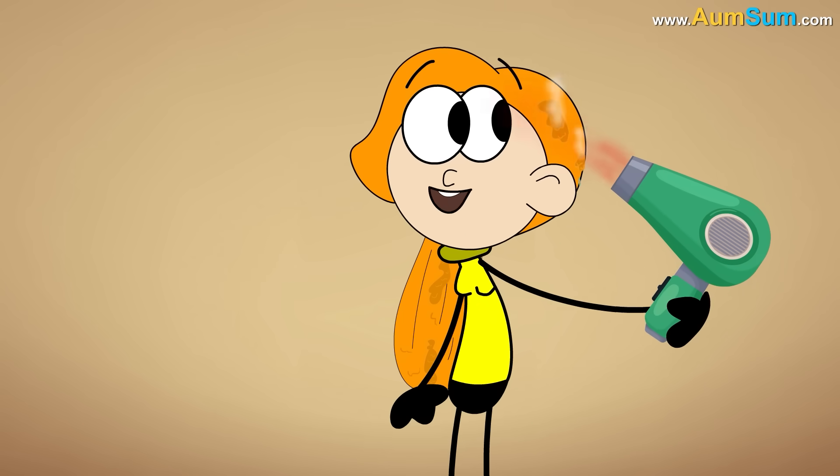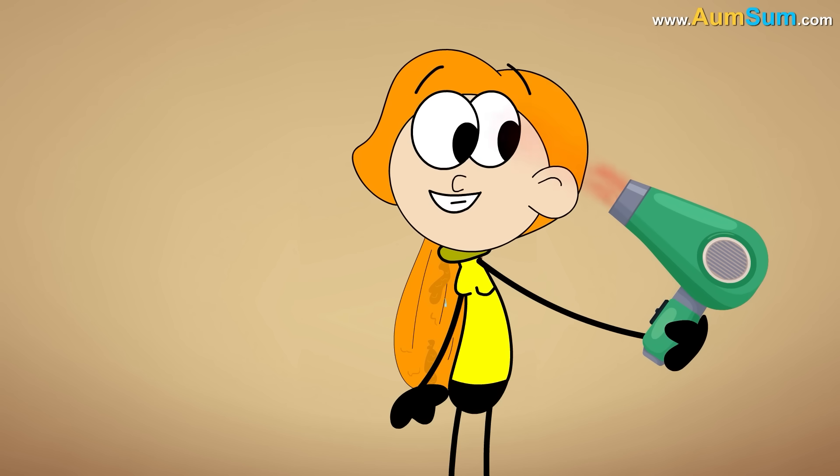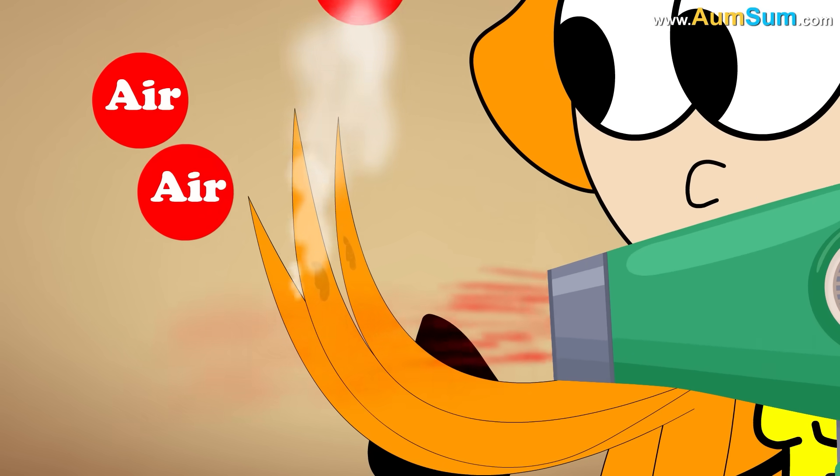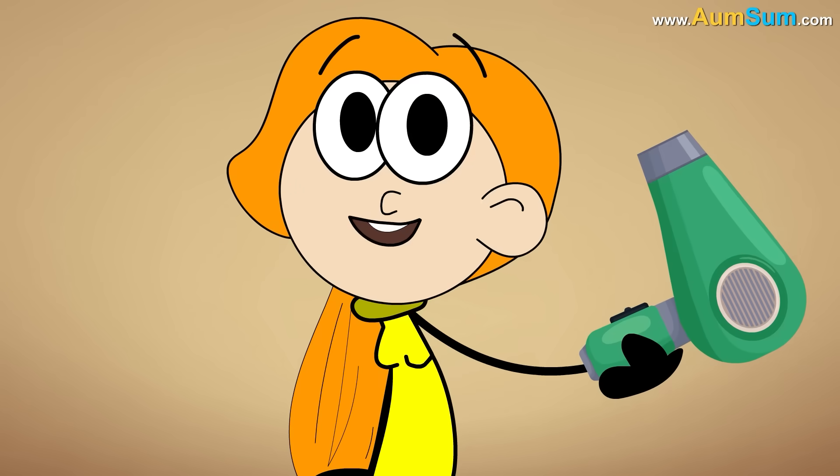This hot air speeds up the evaporation of water from our hair's surface by increasing the temperature of air surrounding each strand of our hair. This is how a hair dryer works.